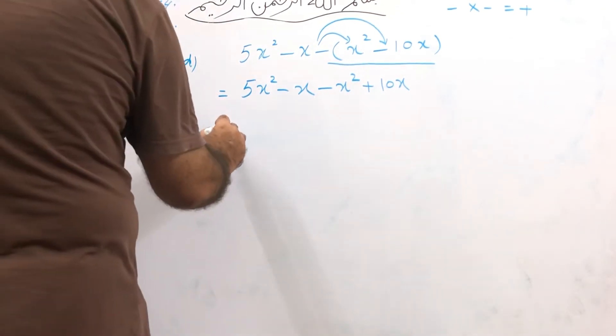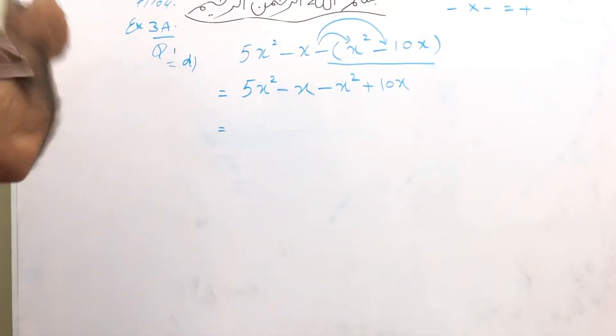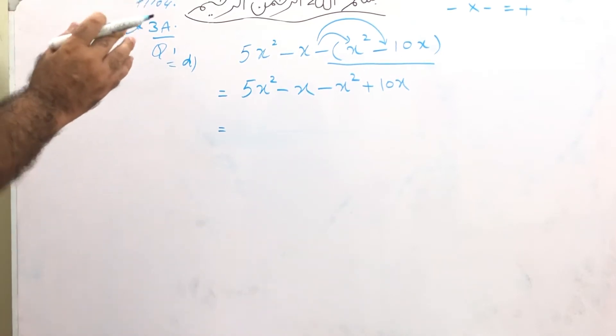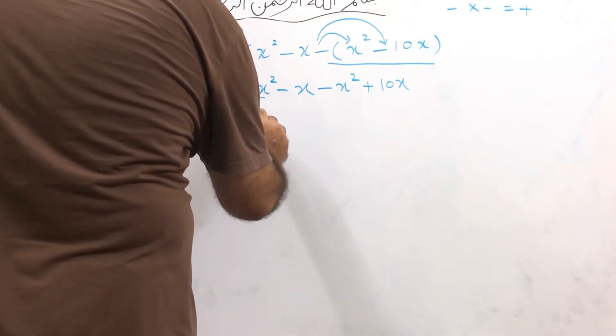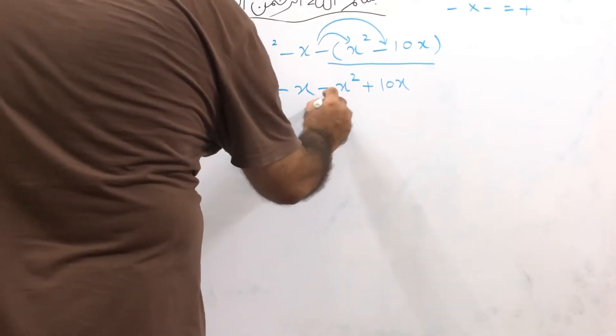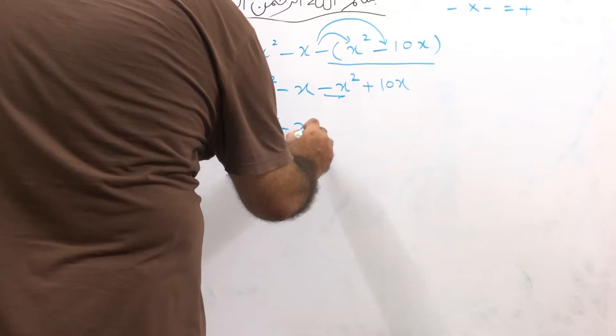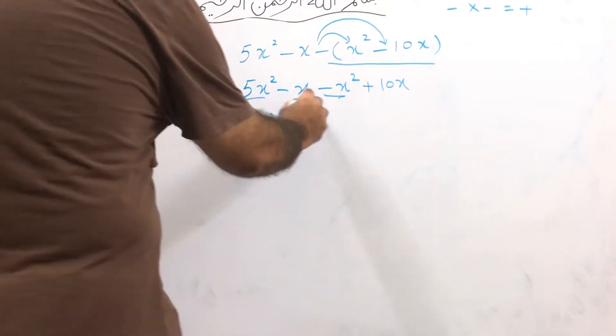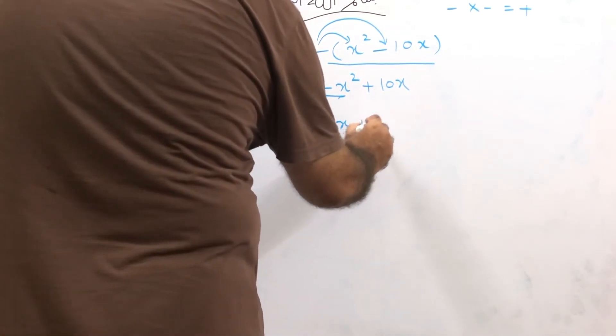Now in the second step, we will bring together the variables with the same powers like this: 5x² minus x², and minus x plus 10x.